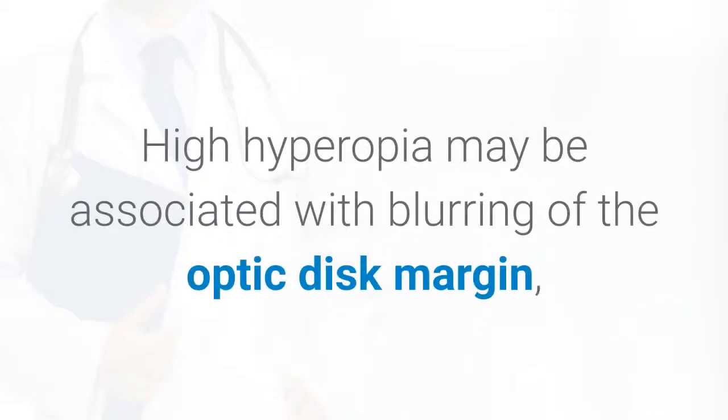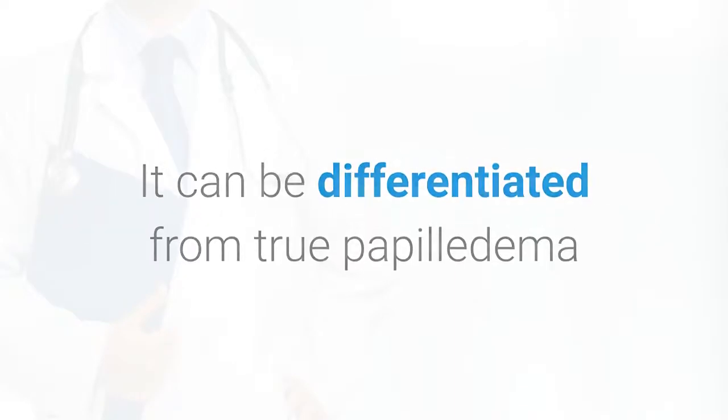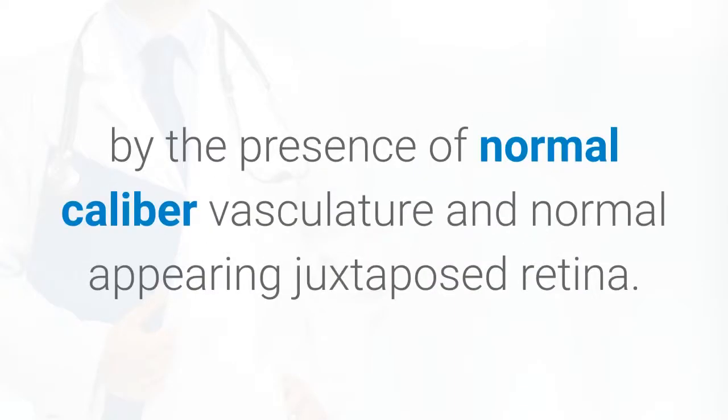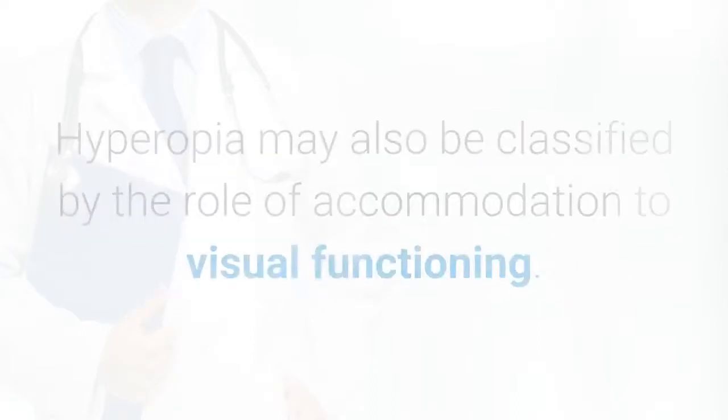High hyperopia may be associated with blurring of the optic disc margin, known as pseudopapilledema. It can be differentiated from true papilledema by the presence of normal caliber vasculature and normal appearing juxtaposed retina.